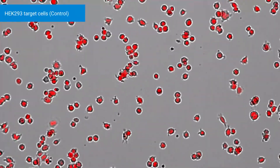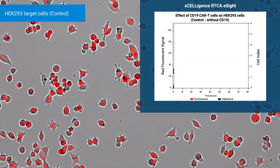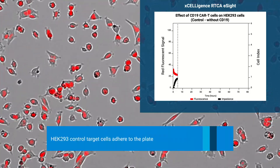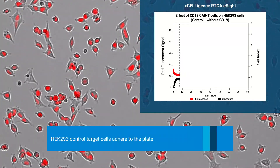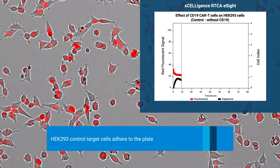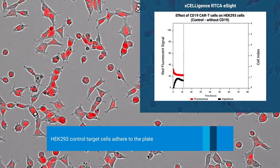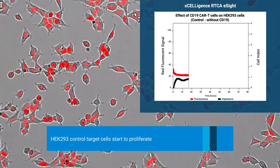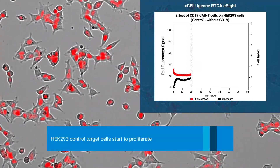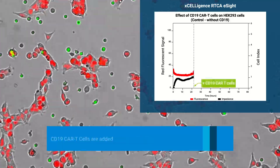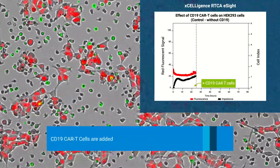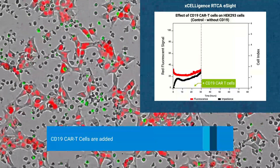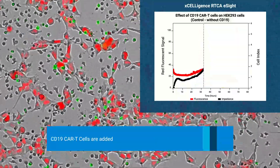In this example, target cancer cells with or without CD19 on the surface are monitored in the E-Site. In the control condition, target cancer cells do not have CD19 on the surface. Imaging and impedance show cells adhering to the E-plate and starting to proliferate. At 22 hours, control target cells are treated with CD19-specific, green fluorescently labeled CAR T cells and placed back in the E-Site.